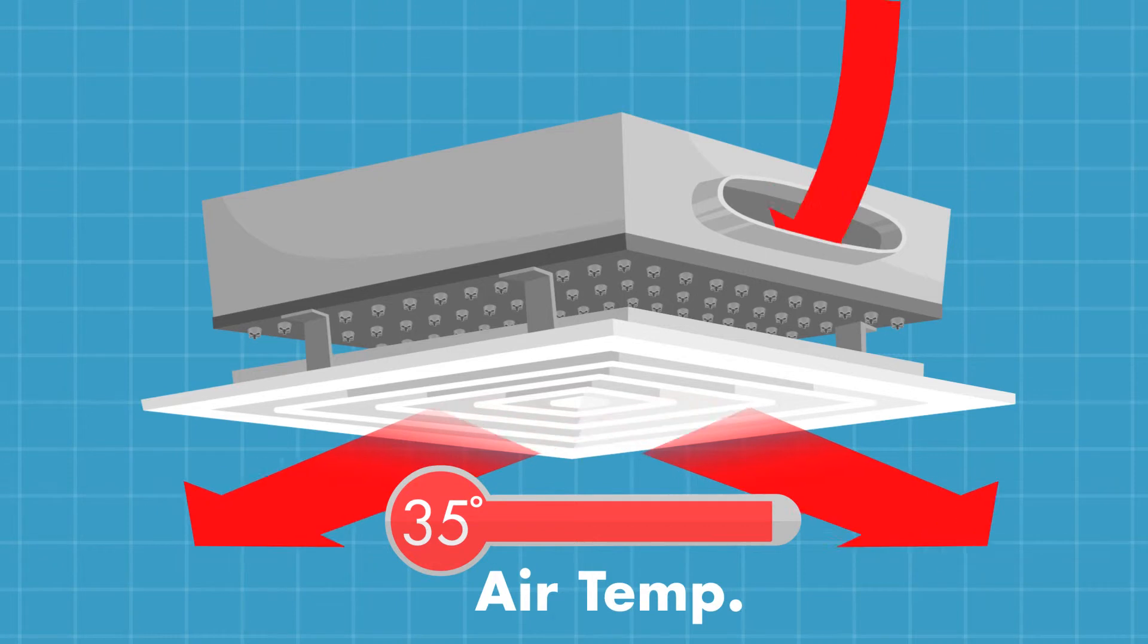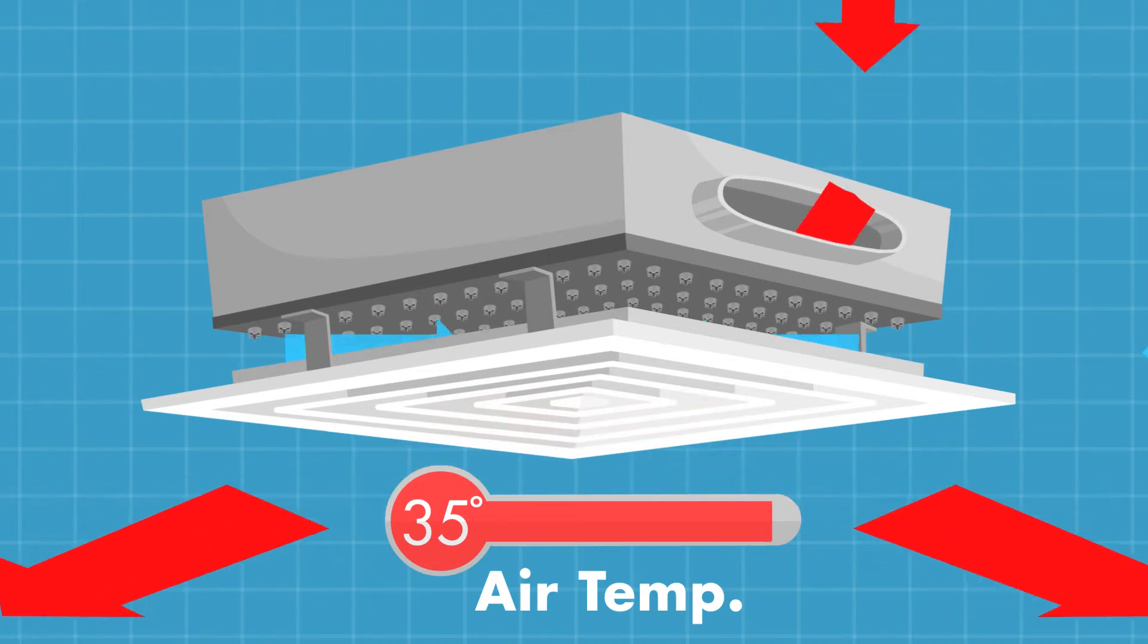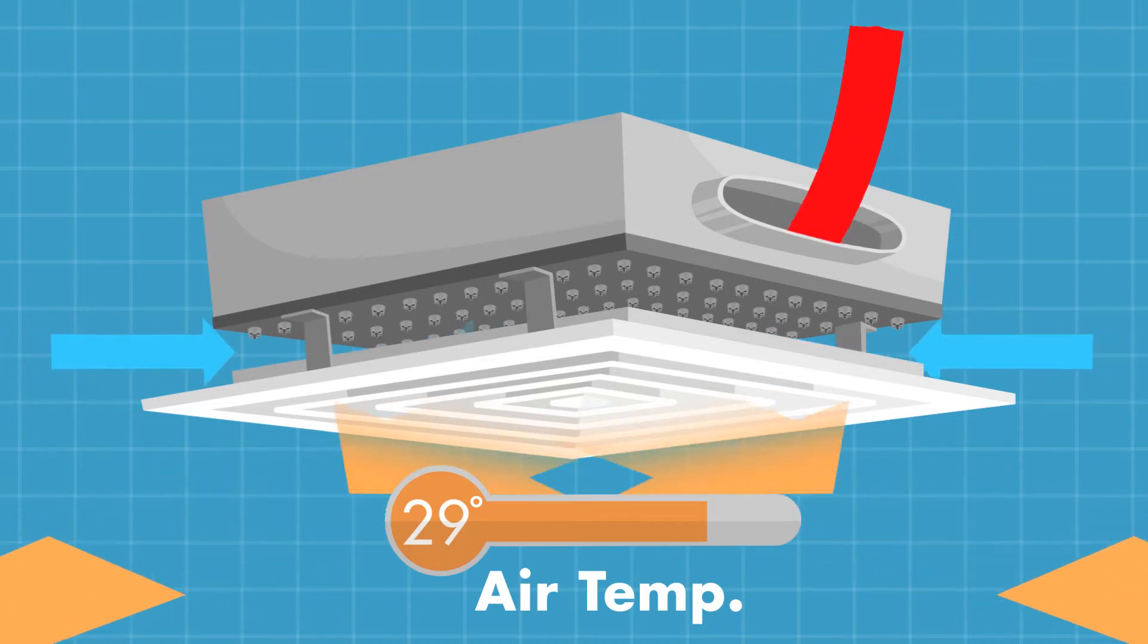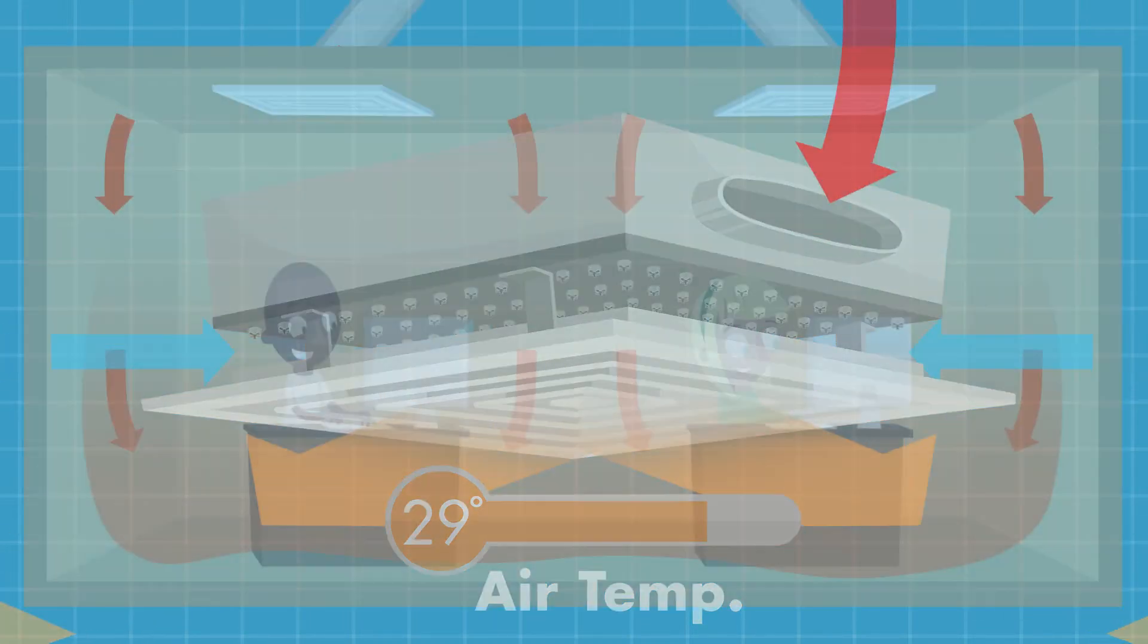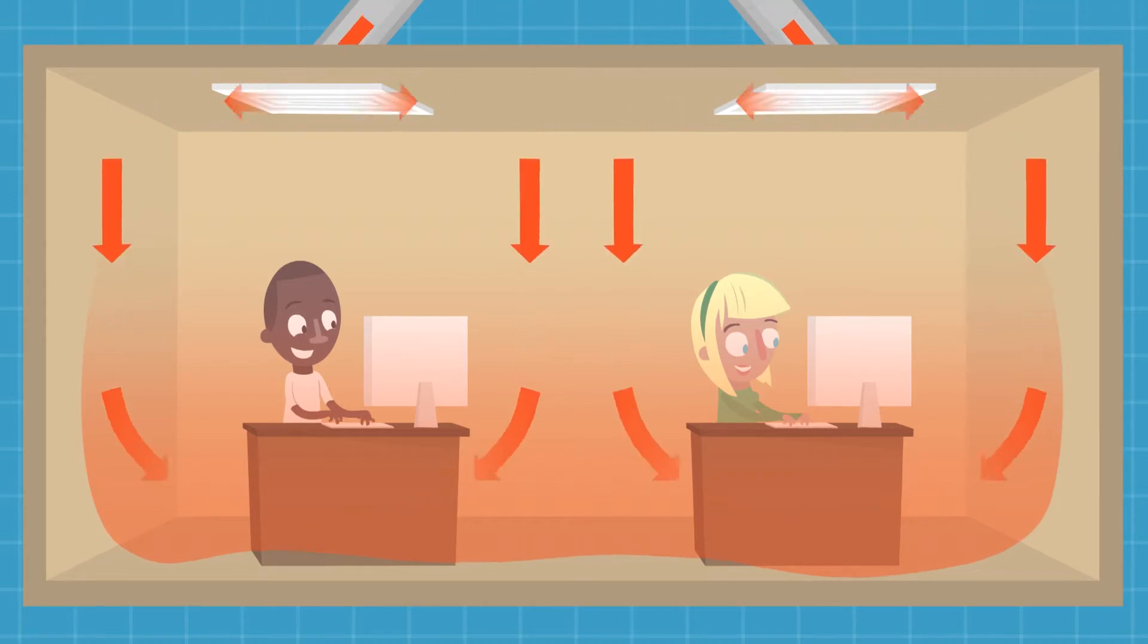When heating, infusers overcome age-old VAV problems and improve comfort by discharging air at a higher total volume and lower temperature. This keeps tenants toasty where it matters, rather than leaving all the warmer air at the ceiling.